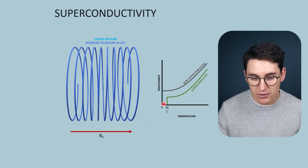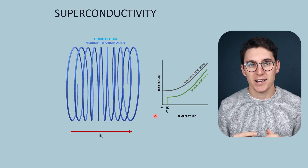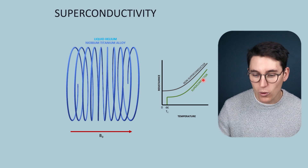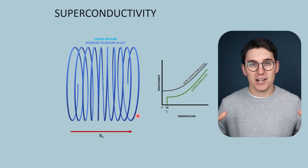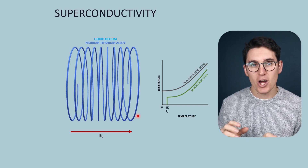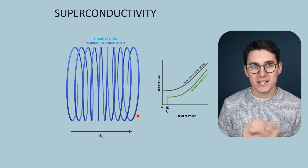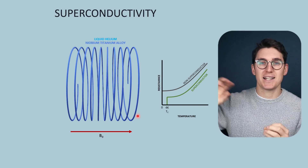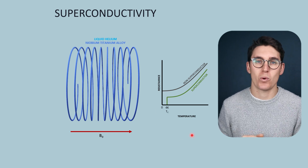If the temperature ever gets above 4 degrees Kelvin we will suddenly get a large amount of resistance within that wire and generate heat. As we generate heat we get more and more resistance, and this liquid helium will become a gas and expand. We get a process known as quenching, where that liquid helium is released as gaseous helium into the room. This is a safety feature in an MRI machine — we need to be able to release that helium if we no longer have superconductivity within these wires.